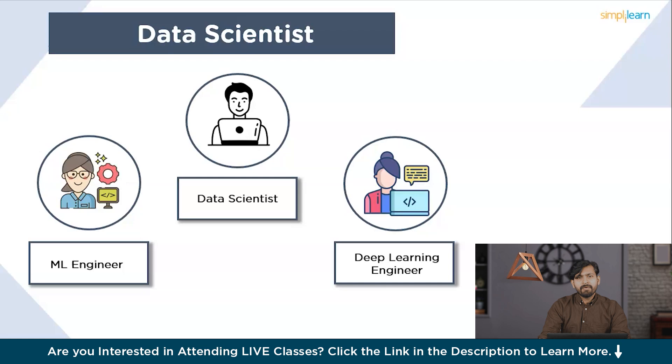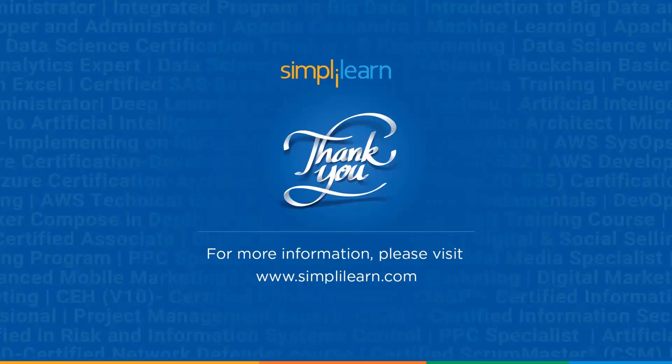When deciding between data engineering, data analytics, and data science, it's essential to consider your interests, skills, and career goals. In conclusion, the choice depends on your interests, skills, and career goals. Each field offers exciting opportunities for growth and impact in 2024 and beyond. Whether you are interested in building data infrastructure, analyzing data to drive business decisions, or applying advanced analytics techniques to solve complex problems, there's a path in the data ecosystem that's right for you. Take the time to explore your options, gain relevant experience, and continuously learn and adapt to stay competitive in this rapidly evolving field. Thank you for watching this video on data engineering versus data analytics and data science in 2024.